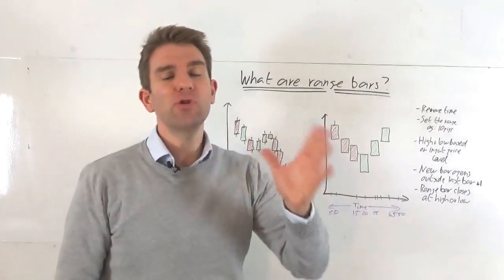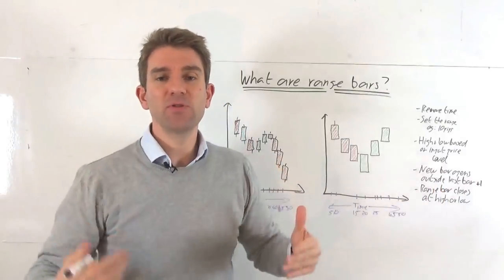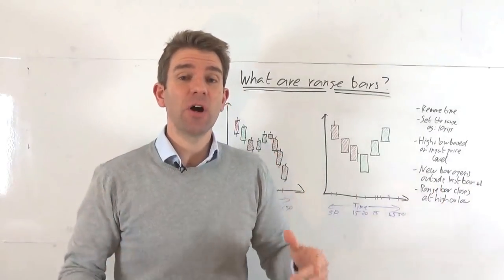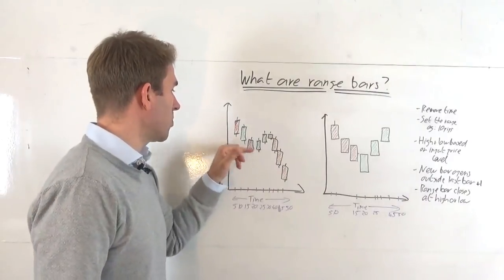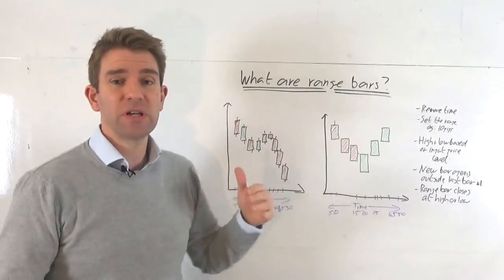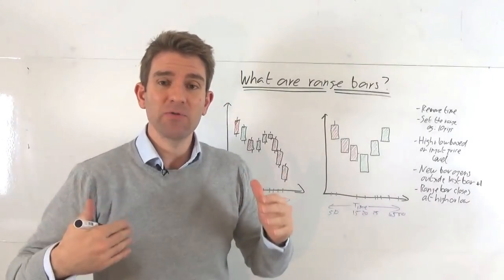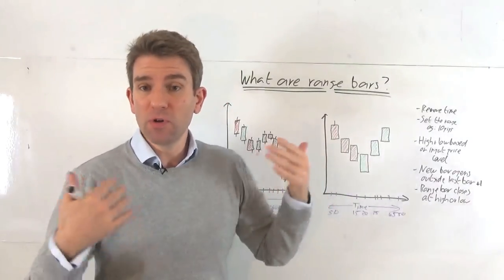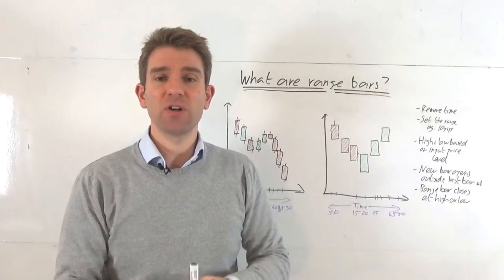If we look at normal charts, we normally would have them split up into time, right? So if you had a daily chart, each candlestick would represent one day. If you had a 15-minute chart, each candlestick would represent 15 minutes of trade. So how does it normally work? Let's assume we're going to use a 15-minute candlestick chart as an example here.